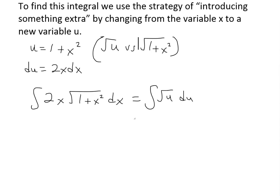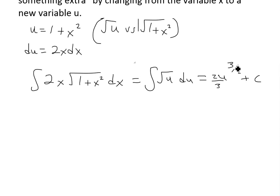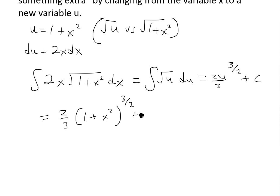As you can see, this is much simpler. Finding the anti-derivative gives us u to the power of 3/2 times 2/3, using our basic anti-derivative formula. Then substituting back, this equals (2/3)(1 plus x squared) to the power of 3/2, plus C.